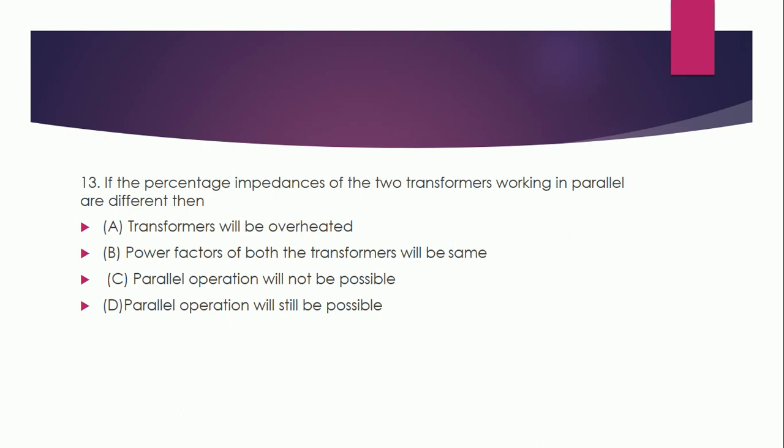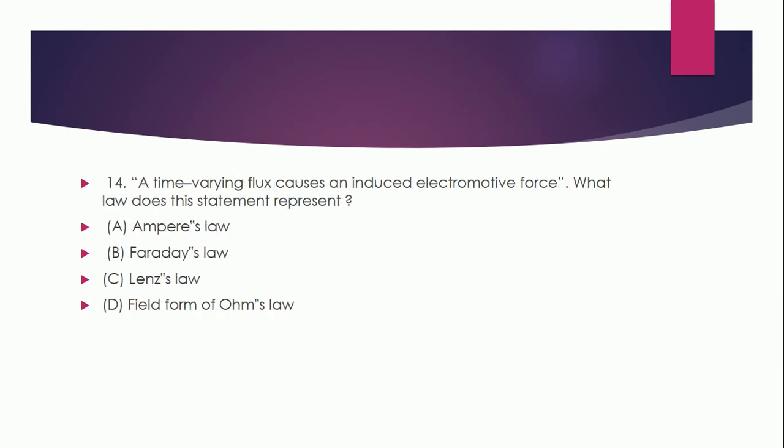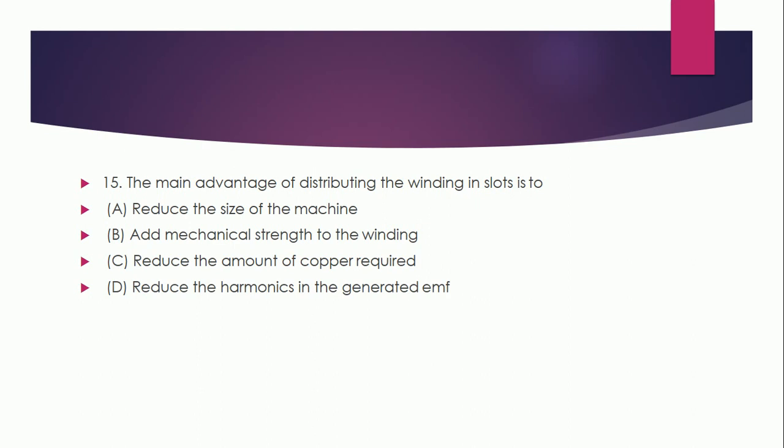Question 13: If the percentage impedance of two transformers working in parallel are different, then: A: transformer will be overheated, B: power factor of both transformers will be same, C: parallel operation will not be possible, D: parallel operation will still be possible. Correct answer is D — parallel operation will still be possible. Question 14: A time-varying flux causes an induced electromotive force — what law does this represent? Ampere's law, Faraday's law, Lenz's law, or field form of Ohm's law? Correct answer is B — Faraday's law. Question 15: The main advantage of distributing the winding in slots is to reduce harmonics in the generated EMF. Correct answer is D.